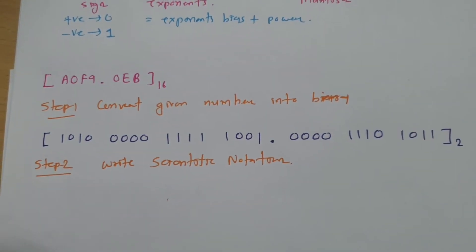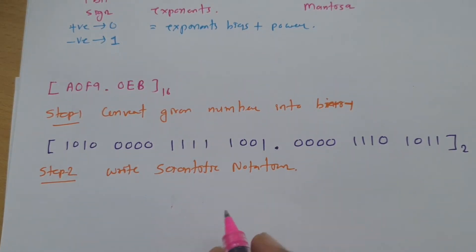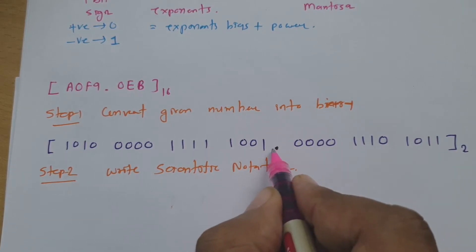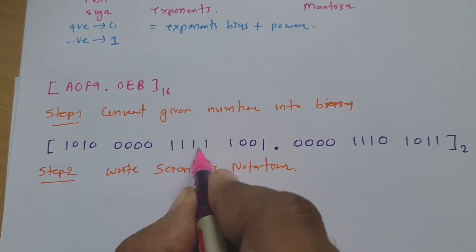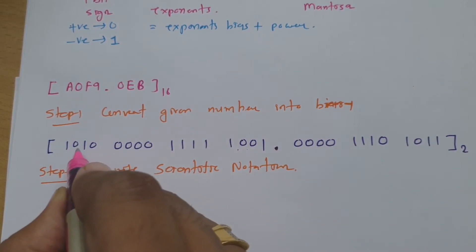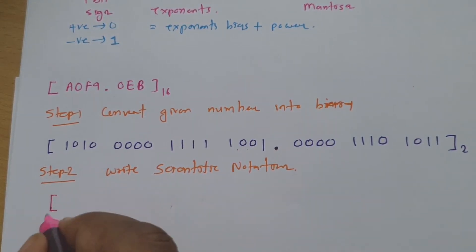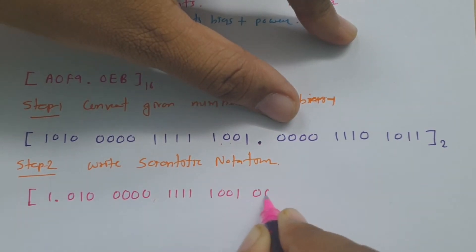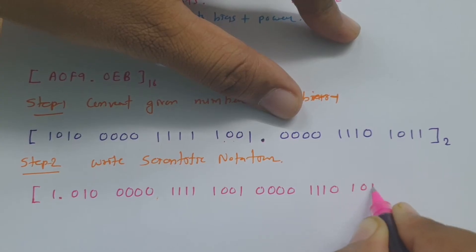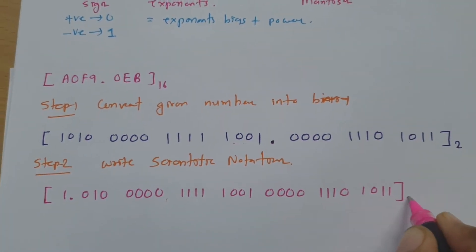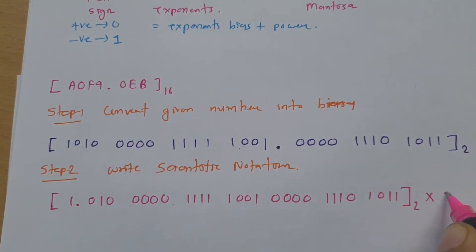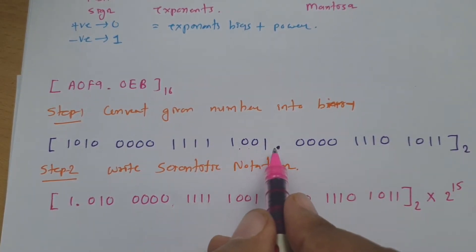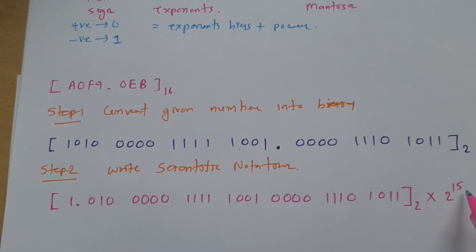Scientific notation is written as 1-point-something. We need to move the fractional point by counting how many digits to jump — in this case 15 digits. So the result is 1.010 0000 1111 1001 00000 1110 1010 1011 multiplied by 2 to the power 15. We jumped 15 digits, so the power is 2^15.